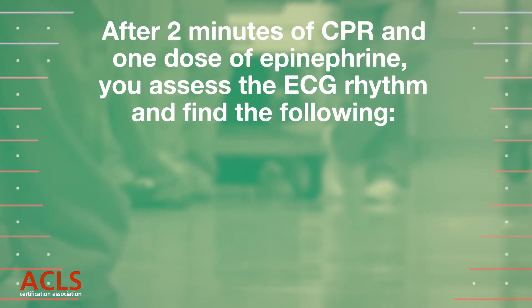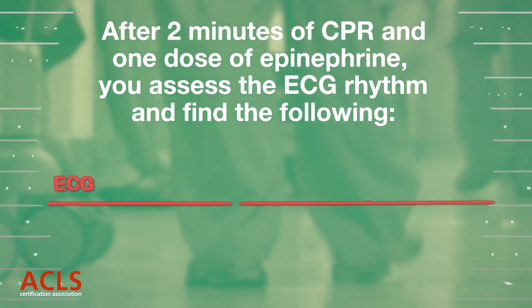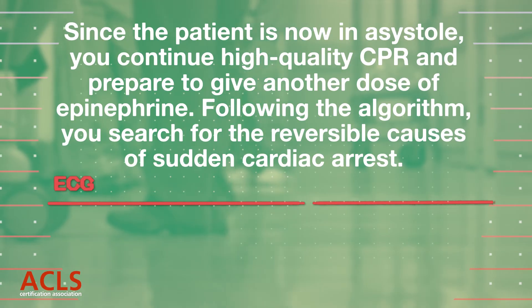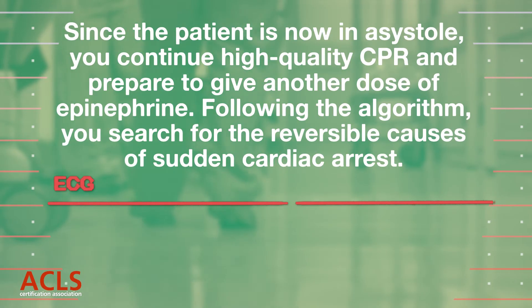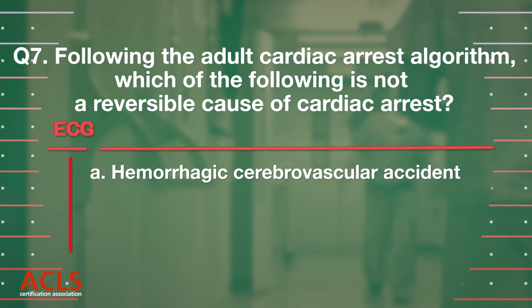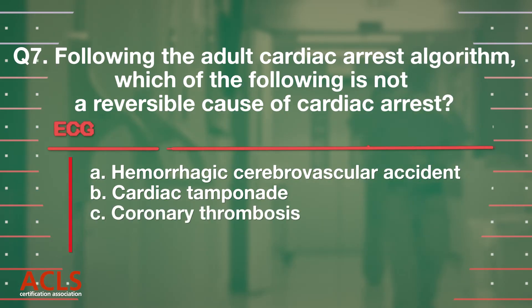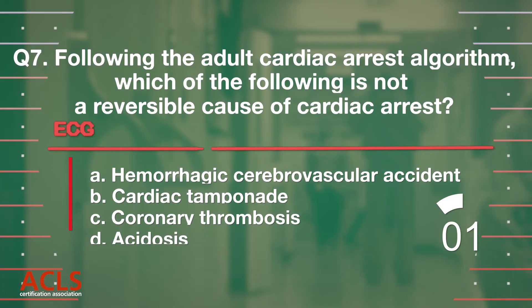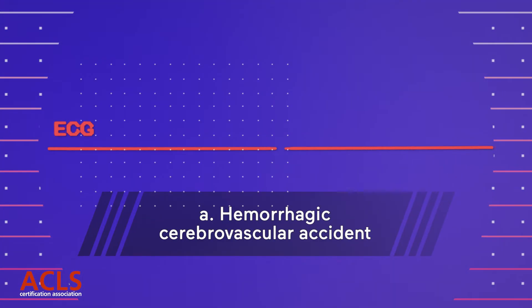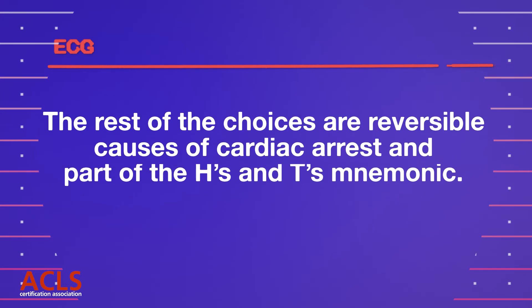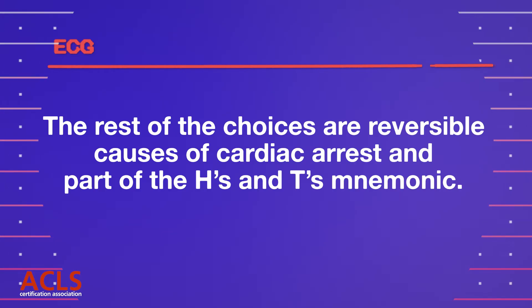After 2 minutes of CPR and 1 dose of epinephrine IV, you assess the ECG rhythm. You continue CPR for another 2 minutes and prepare to give another dose of epinephrine. Following the algorithm, you search for the reversible causes of sudden cardiac arrest. Question 7: Which of the following is NOT a reversible cause of cardiac arrest? A. Hemorrhagic cerebrovascular accident. Correct answer: A. Hemorrhagic cerebrovascular accident — this is not one of the reversible causes in the adult cardiac arrest algorithm. The rest are reversible causes, part of the H's and T's mnemonic.